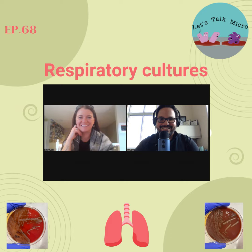Group B Strep in the pediatric population should be identified and reported. Unusual but important organisms include Francisella tularensis, Yersinia pestis, Nocardia, and Bacillus anthracis — we don't see these often, but they should be in the back of your mind and reported if seen. The organisms we most often associate with respiratory disease — and must be careful about reporting — include Streptococcus pneumoniae, a major pathogen that also normally colonizes the oropharyngeal space.